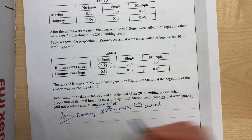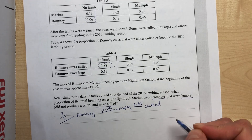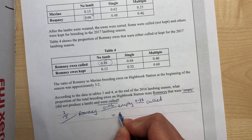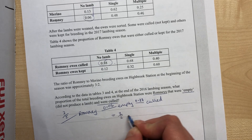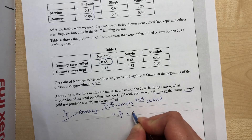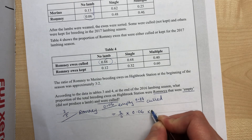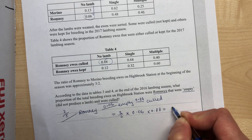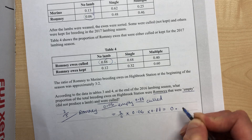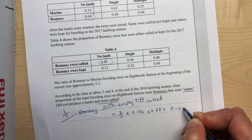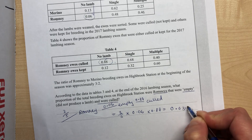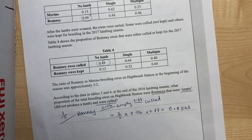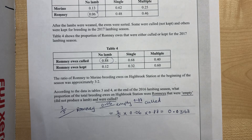To work out the probability across a branch we multiply them together, so three fifths times 0.06 times 0.88 equals 0.03168.